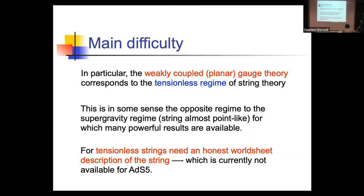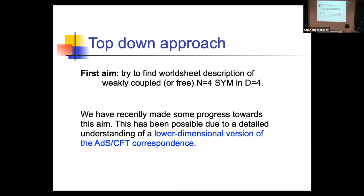The key problem is that the weakly coupled planar gauge theory corresponds to the tensionless regime of the string, which is not the regime where we can use supergravity methods. We need an honest worldsheet description, and an honest worldsheet description for ADS-5 is not currently known. The first aim — a more realistic one — is to find a worldsheet description of weakly coupled N=4 super Yang-Mills in four dimensions as a starting point.